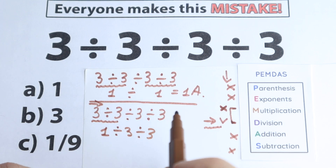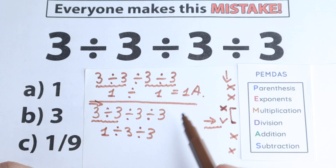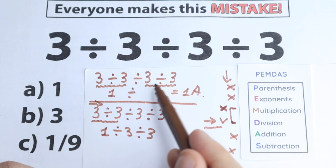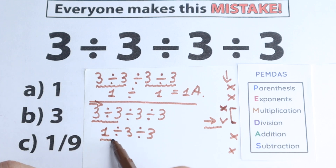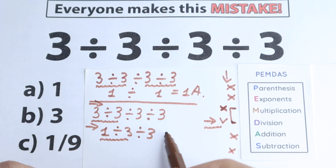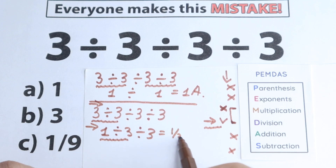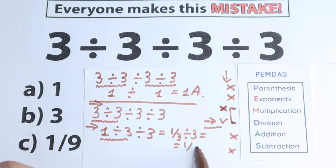We still have this expression with division, and the next first sign from left to right is the division in the middle. So we take 1 divided by 3, which equals one-third. We still have one more division — one-third divided by 3 — and our answer is 1 over 9.